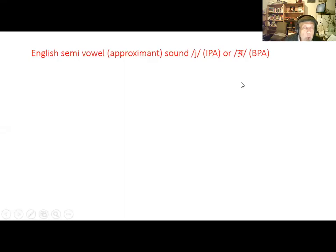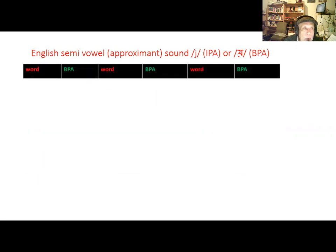In this video we'll look at an English consonant sound 'Y', which sounds very much like a vowel, so it is often referred to as a semi-vowel or an approximant.